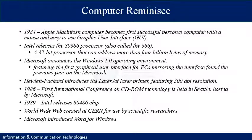After that, development started rapidly. In 1984, Apple Macintosh computers became the first successful personal computers with a mouse and an easy-to-use graphical user interface — the first computer with a screen to manipulate with the mouse. In the same year, Intel released the 80386 processor, also called the 386 processor, a 32-bit processor that could address more than 4 billion bytes of memory, equal to 4 gigabytes.